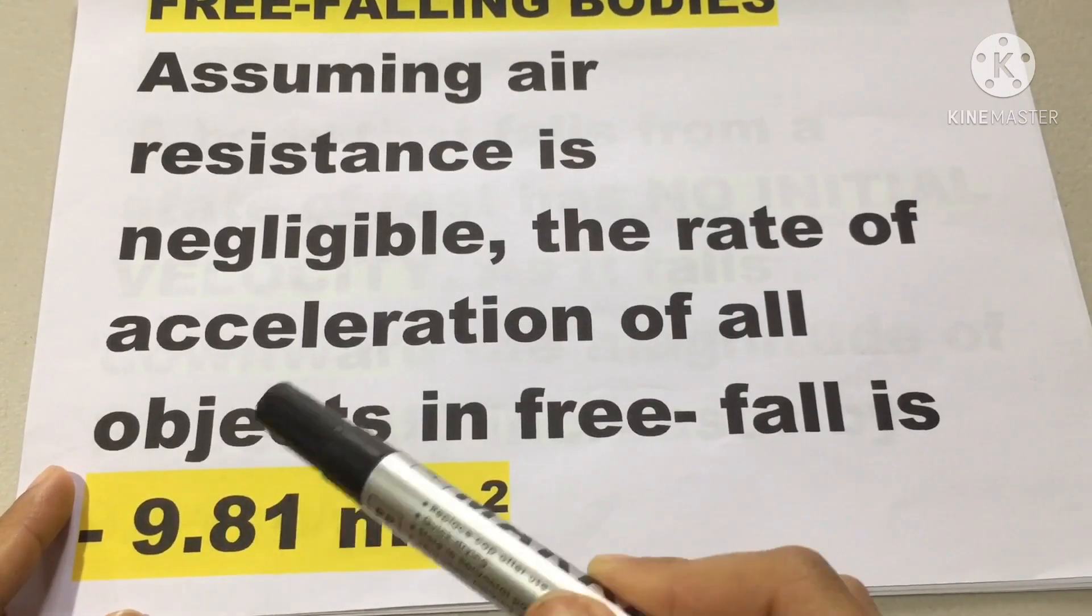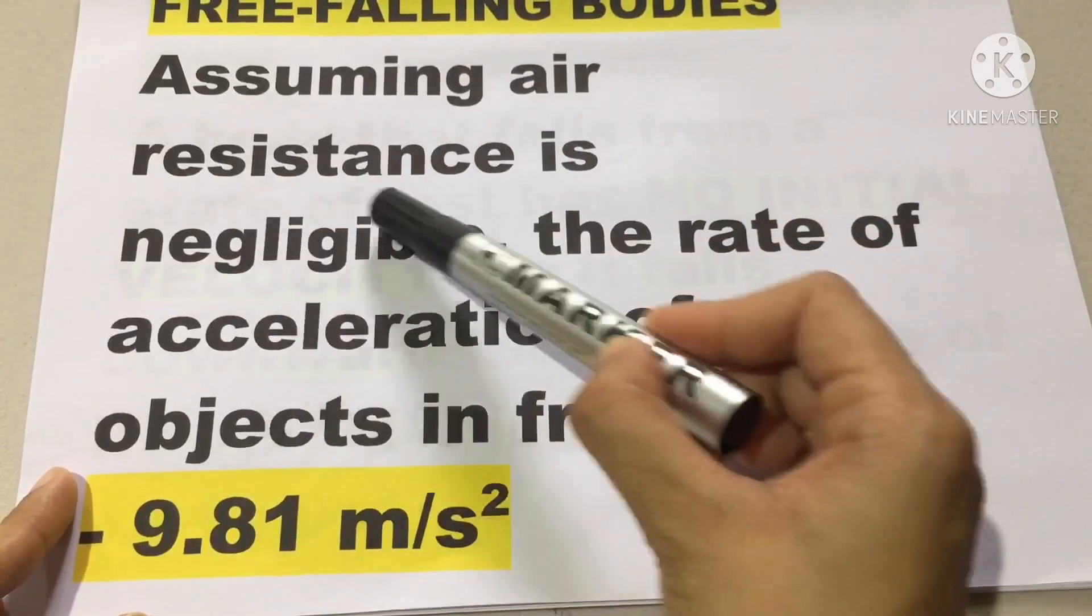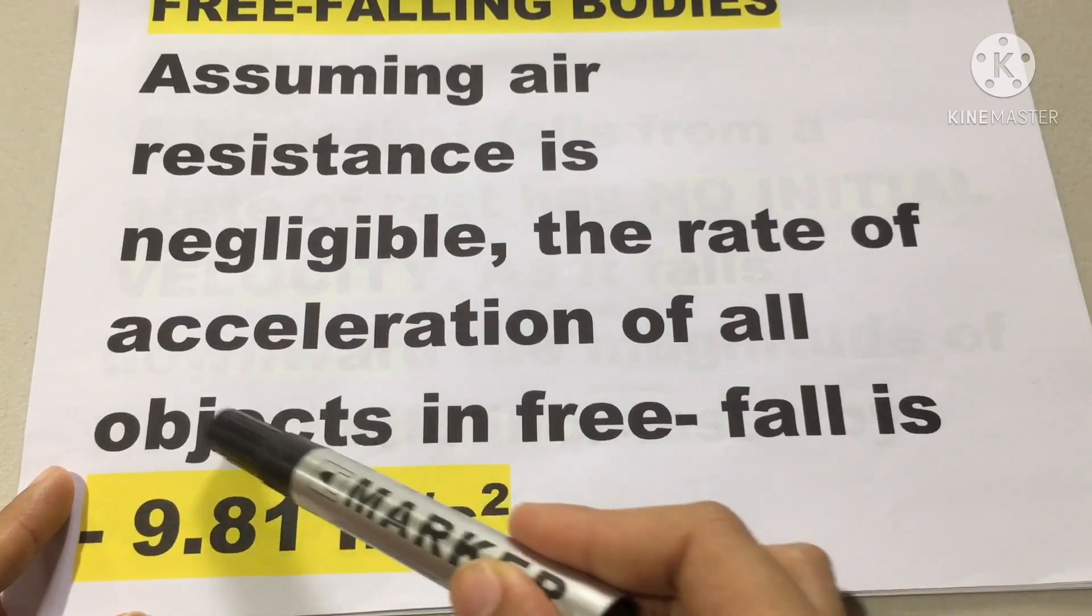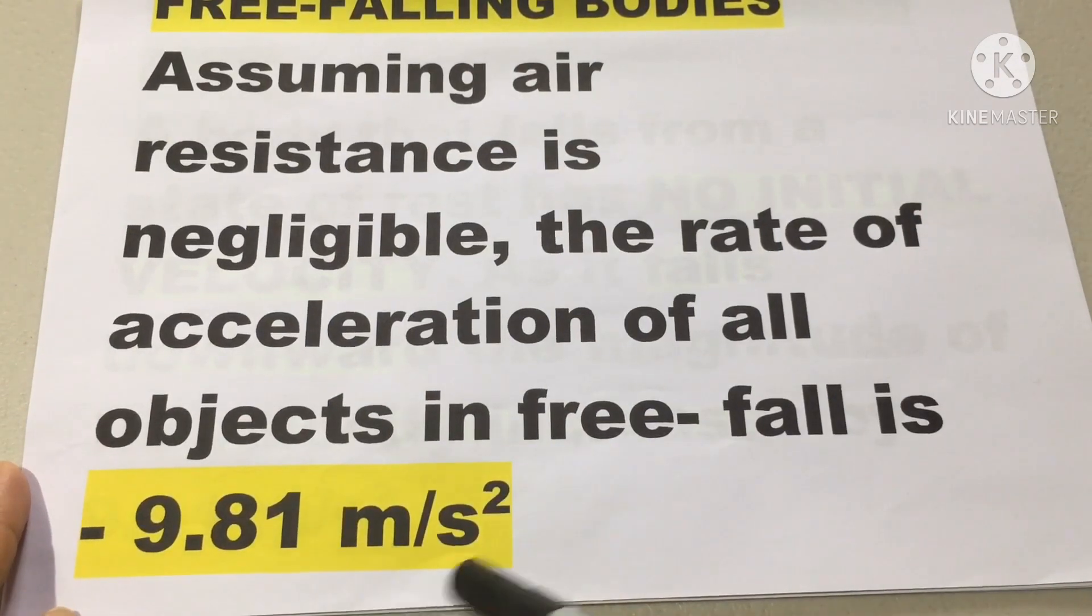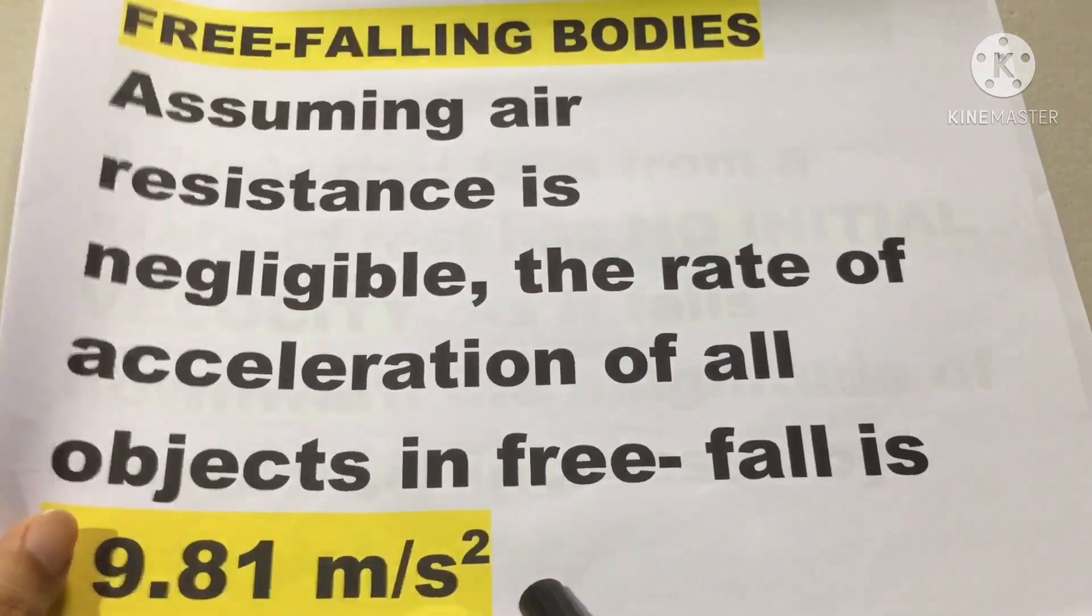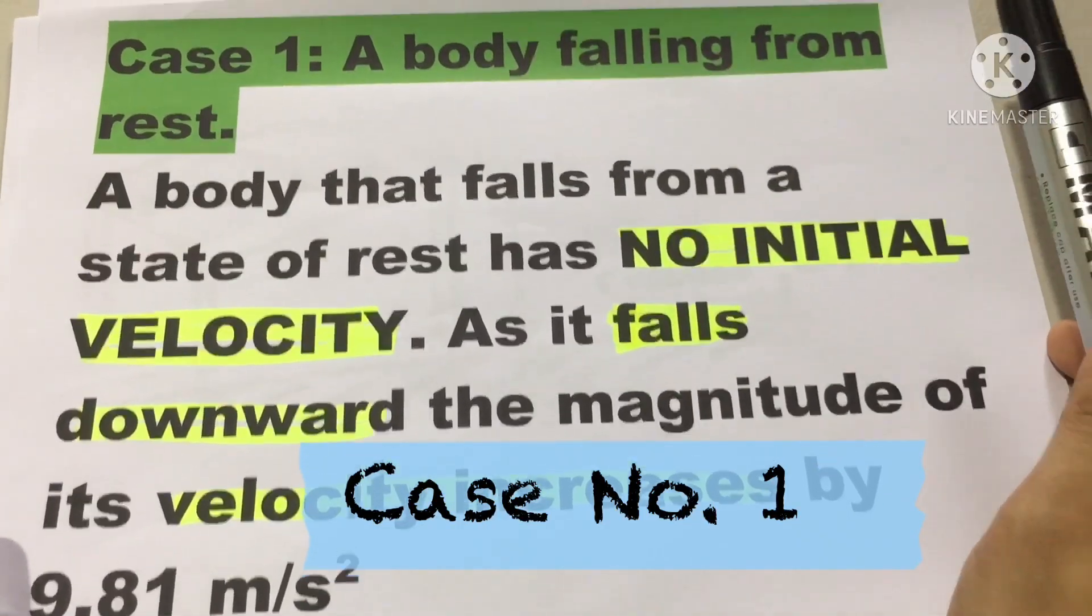So regardless of the shapes, the size, the mass, since there's no air resistance that exists, that is why the rate of acceleration is constant, that is equivalent of negative 9.81 meters per second squared. Now, there are three cases in the free falling bodies.